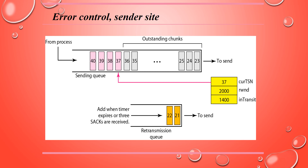For congestion control, SCTP employs slow start (exponential increase), congestion avoidance, and congestion detection phases. Like TCP, SCTP also has fast retransmission and fast recovery strategies. This concludes the discussion of process-to-process communication for SCTP.